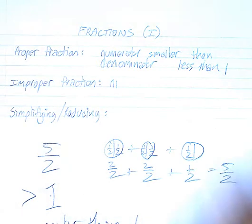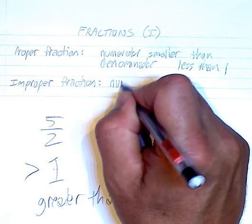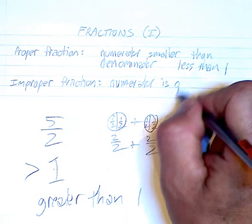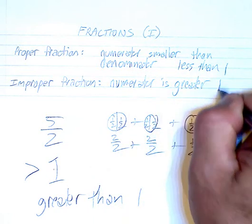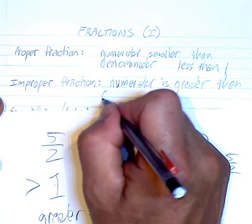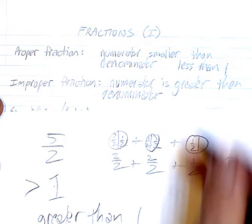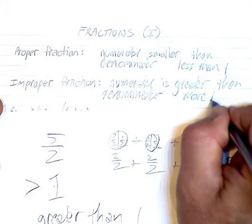And here, improper fraction is numerator is greater than the denominator. And this is more than 1 whole.